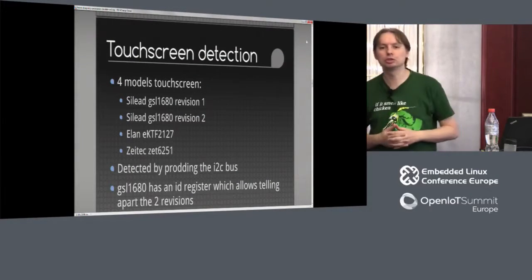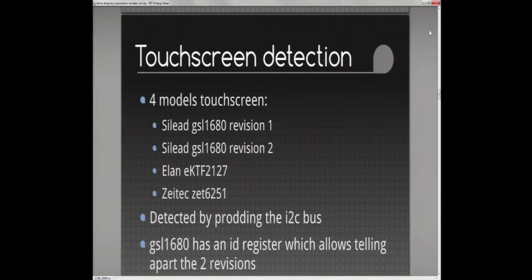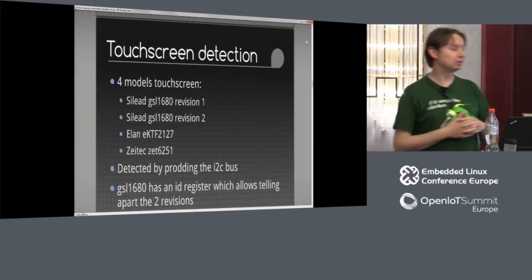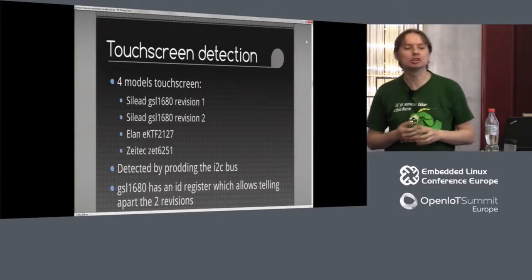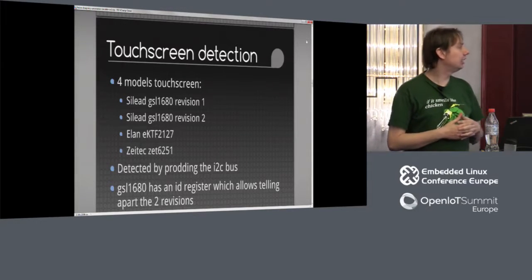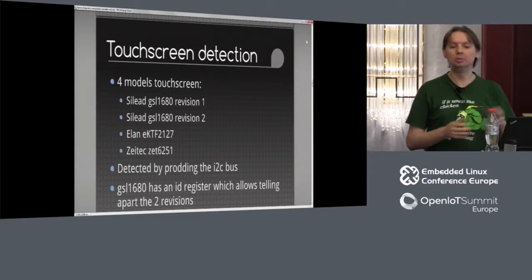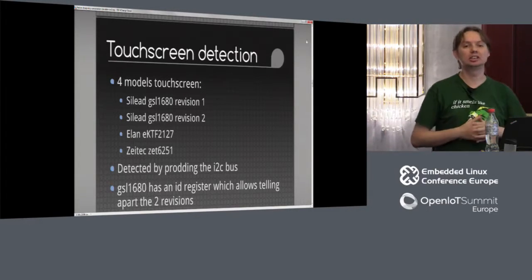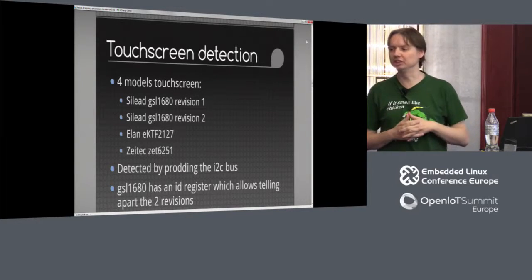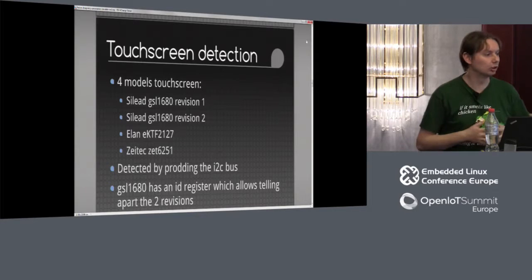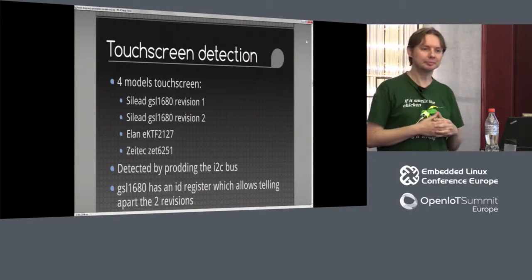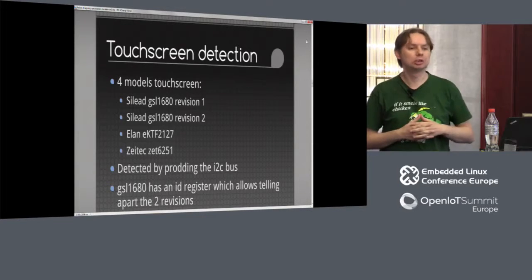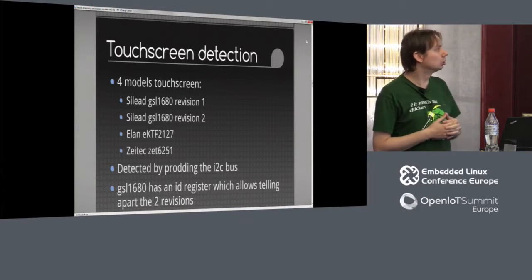The touchscreen is actually the biggest problem. There are four models of touchscreen which I have seen in the 16 models I have — two revisions of the Silead GSL1680 controller, which are the nasty ones because they're in almost all the tablets, but they're not wired up the same in all the tablets. Then there's the ELAN and the Xitec which are only found in one tablet I have, so they're sort of easy — if they're there, I know which firmware file to load. Detecting which of the four models is present is actually easy: you just bit-bang the I2C bus, and if something is listening at an address you can read an ID register. The GSL1680 also has a revision register so I know which revision I have.